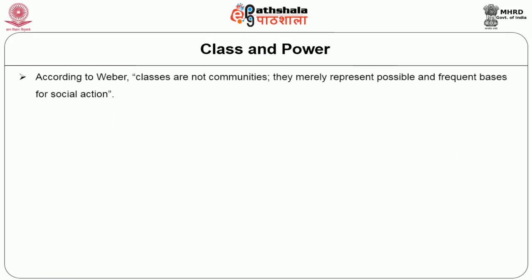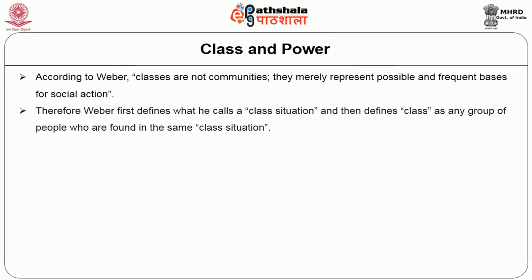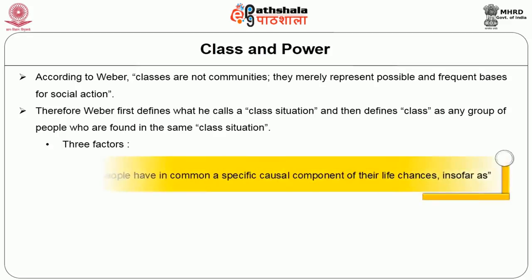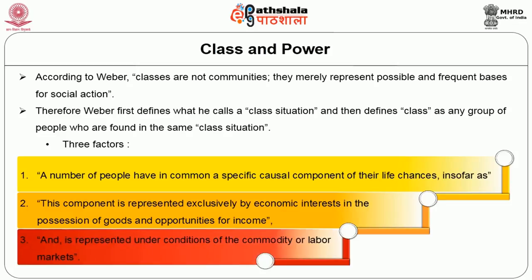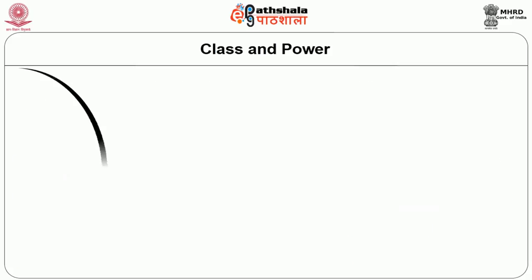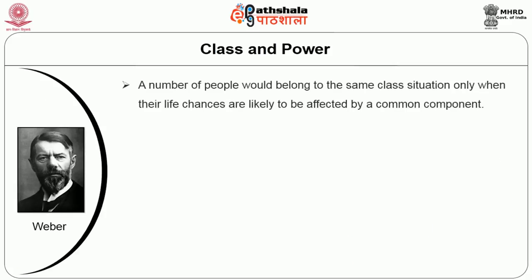According to Weber, classes are not communities — they merely represent possible and frequent bases for social action. Weber first defines what he calls 'class situation,' then defines class as a group of people found in the same class situation. He identifies three factors constituting class situation: a number of people share a specific causal component of their life chances; this component is represented exclusively by economic interests in possession of goods and opportunities for income; and it is represented under conditions of the commodity or labour markets.